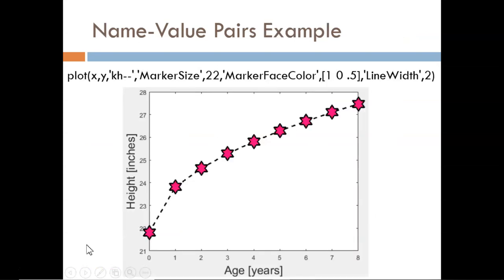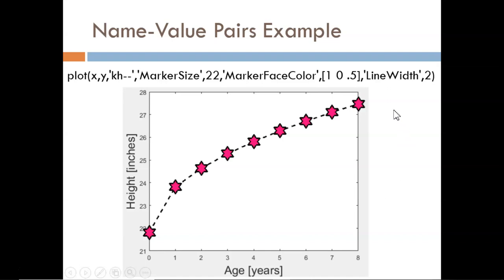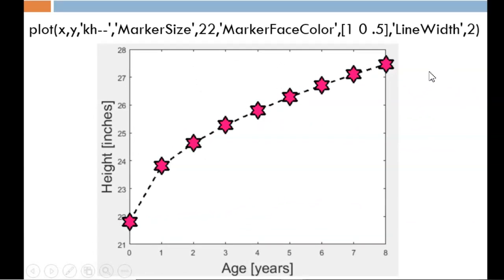Using name value pairs makes the most sense within an example. Here, I use the plot function to plot the same data we have been looking at. The three shorthand modifiers still apply, which causes a black line, hexagram markers, and a dashed line.